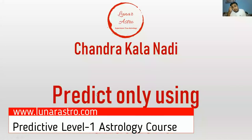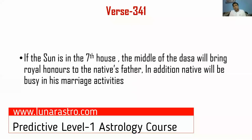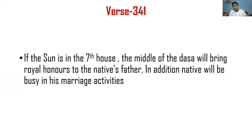Now let us come to the verse of Chandakala Nadi. Let me share the PowerPoint. This is the Chandakala Nadi — predicting using Mahadasha only. Verse number 341 states: if the Sun is in the seventh house, in the middle of the dasha it will bring royal honors to the native's father. In addition, the native will be busy in marriage activities.